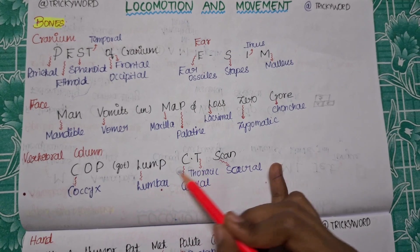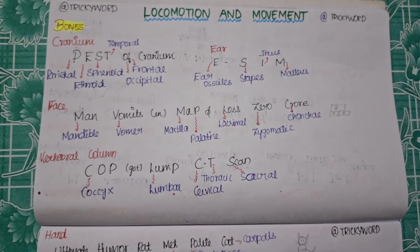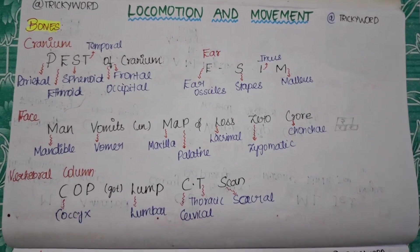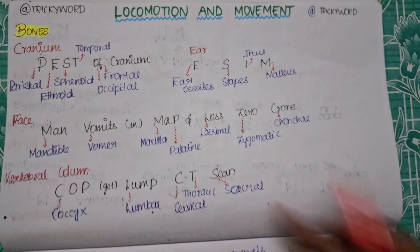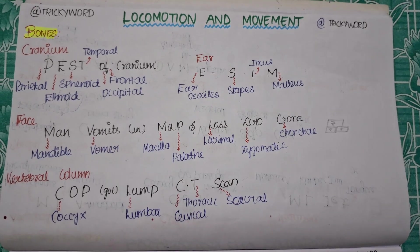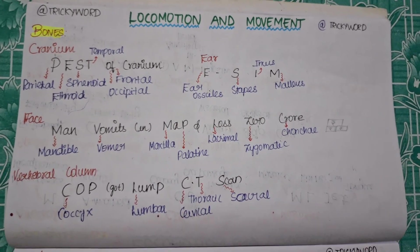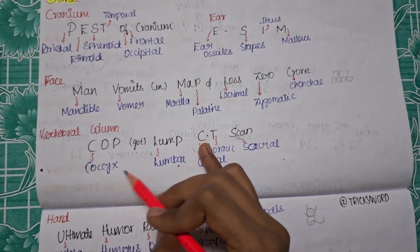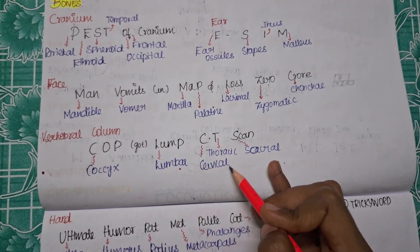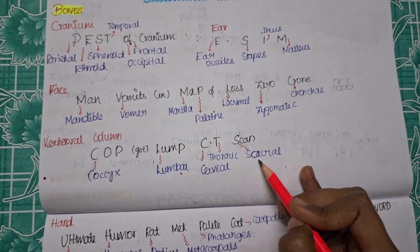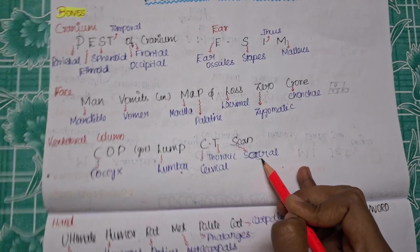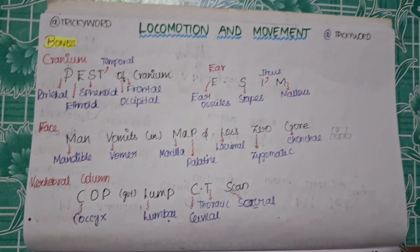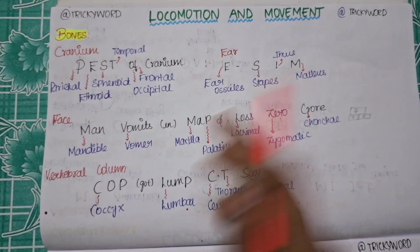And vertebral column. For vertebral column it is COP got lump CT scan. A cop is nothing but your police, right? They usually don't take care of body, but suddenly one person got heavy body pain, so he need to take lump CT scan. These stories I am saying to make this trick easy so that it will be in your mind. COP got lump CT scan: COP is for coccyx, lump is for your lumbar bone, C is for cervical, T is for your thoracic, and scan is for S-A-C-N, just a little interchange. S-A-C is for your sacral bone. Are we clear with the vertebral column? In this page we have covered the bones of cranium, your face, and also vertebral column.